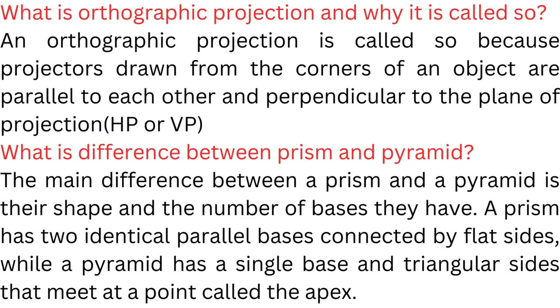What is orthographic projection and why is it called so? An orthographic projection is called so because projectors drawn from the corners of an object are parallel to each other and perpendicular to the plane of projection.